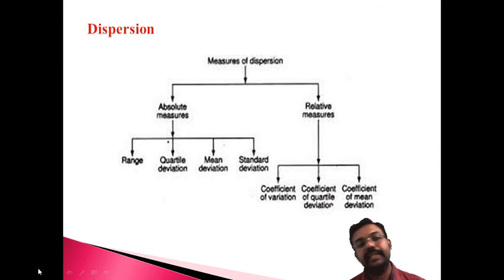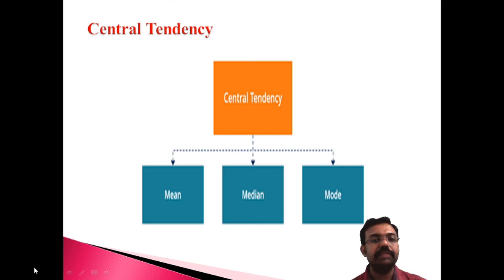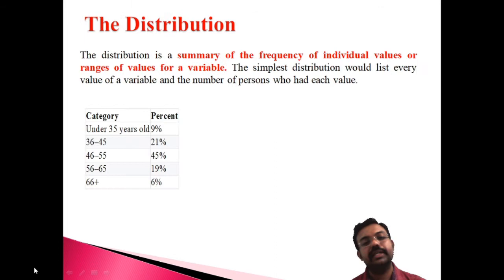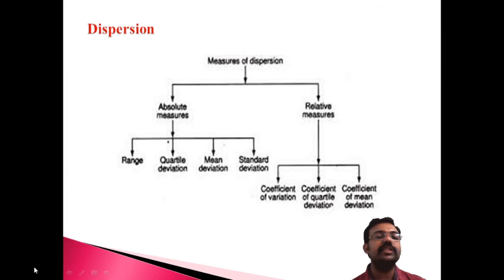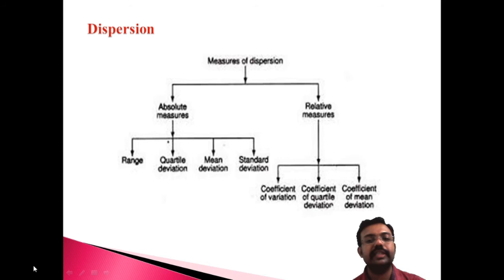The third category of univariate analysis is dispersion. Dispersion has two categories: absolute measures and relative measures. Absolute measures include range, quartile deviation, mean deviation, and standard deviation. Relative measures include the coefficient of variation, coefficient of quartile deviation, and coefficient of mean deviation.